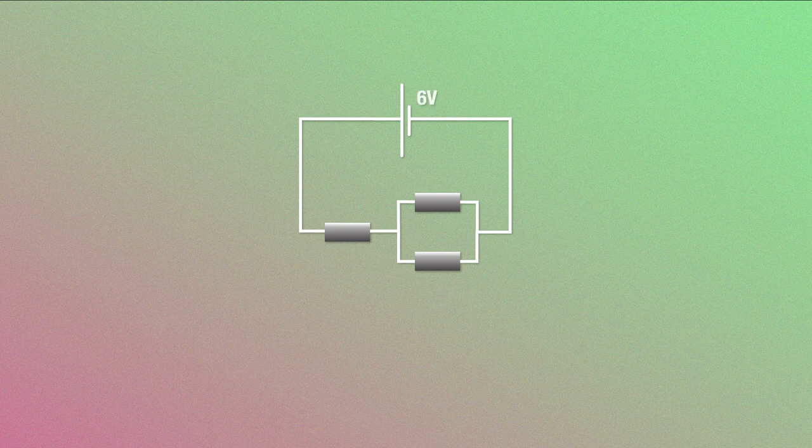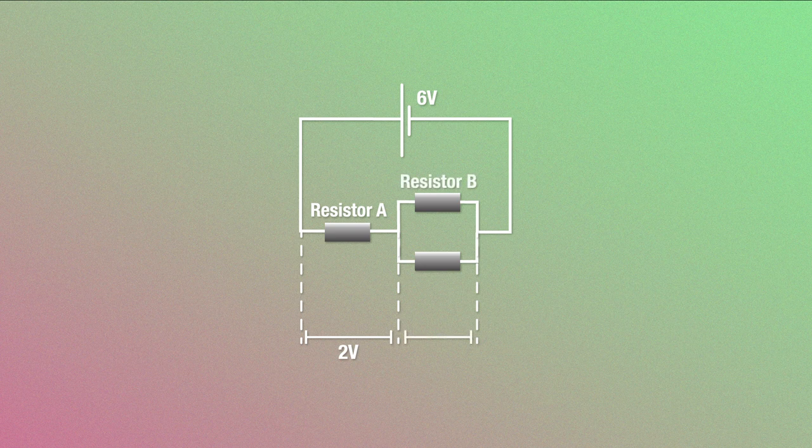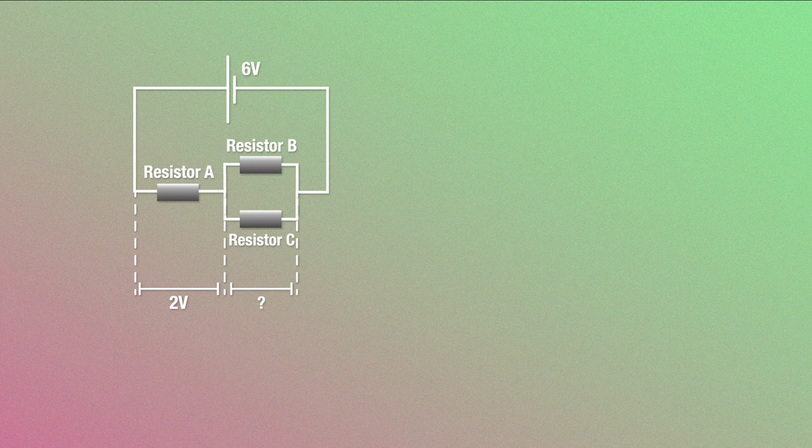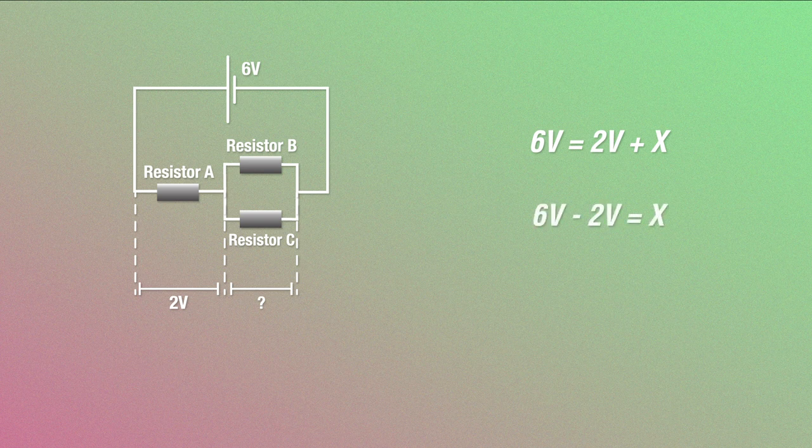Pop quiz time! Picture this. A circuit with a 6-volt battery and three resistors. Resistor A is attached in series with 2 volts of potential difference across it. Resistors B and C are attached in parallel to each other but in series to resistor A. So what's the potential difference across B and C? Go back to the two Kirchhoff laws. Since the battery gives 6 volts of increase in potential, the total decrease in potential must also be 6 volts, right? Because it has to have a net zero.